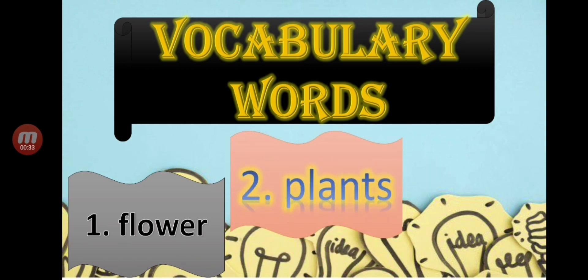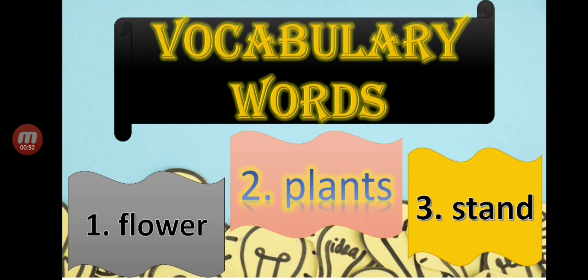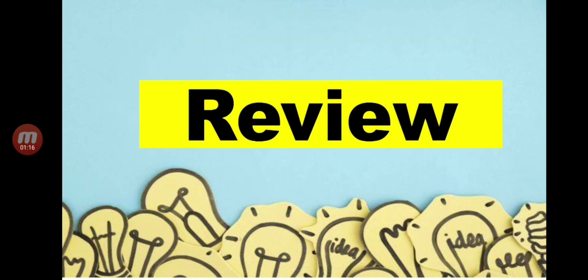Number two is plants. Everybody: plants. Again, plants. Let us spell the word plants: P-L-A-N-T-S. Plants. Next, the third word is stand. Stand. Okay, let us spell the word stand: S-T-A-N-D. Stand. Okay, now this time we will have a review from our first topic about living things.